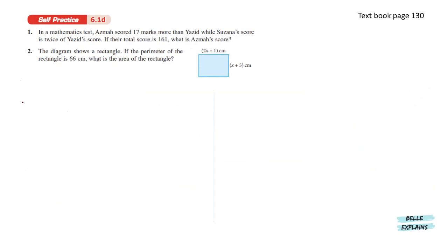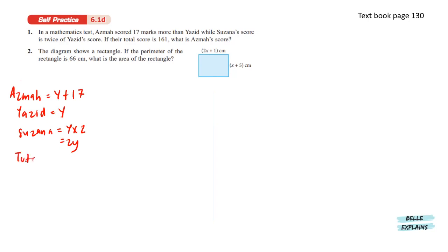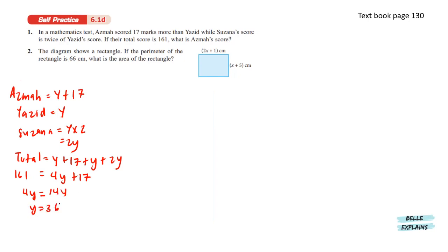Moving on to self-practice 6.1d. In a mathematics test, Asma scored 17 marks more than Yazid, while Susanna's score is twice Yazid's score. So Asma is y plus 17, Yazid is y, and Susanna is 2y. The total score is y plus 17 plus y plus 2y. Simplifying gives us y equals 36, so Asma's score is 36 plus 17, which gives us 53 marks.